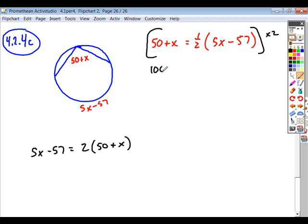I just multiply everything on both sides of this equation by 2. So that's going to give me 50 times 2 plus x times 2. And then here, you just need to be careful. The one half is going to cancel with that 2, and the whole expression 5x minus 57 will stay as it is.